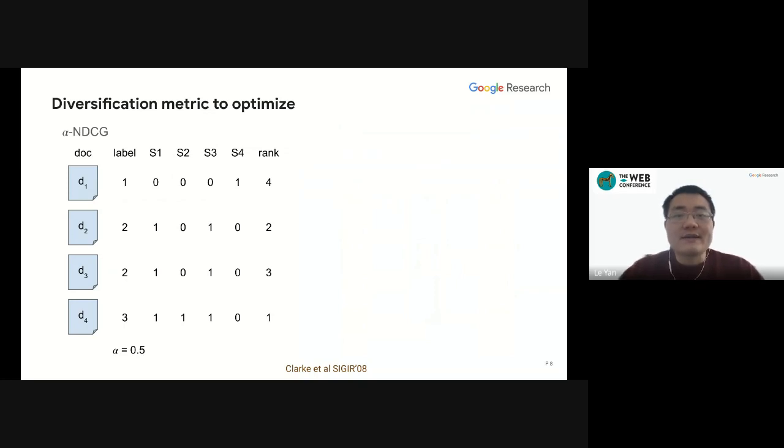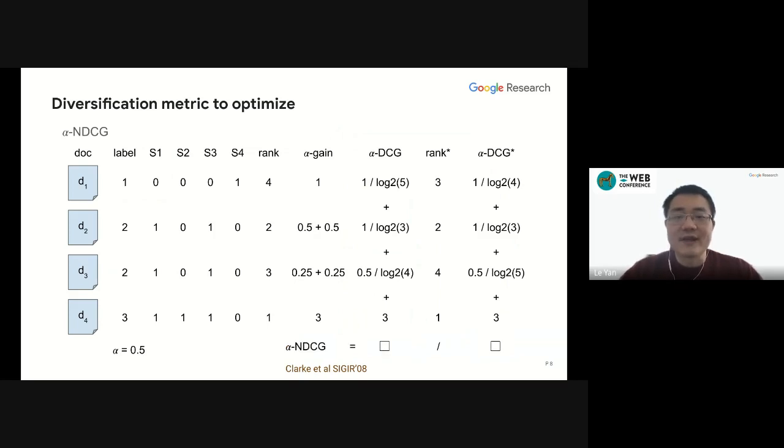To directly optimize the diversification metrics, consider alpha NDCG metric as an example. Given a ranking of the candidate documents and the subtopic labels of the documents, we can compute an alpha gain based on the subtopic relevance and a discount due to the coverage of the same subtopic in the top-ranked results. And similarly to the discounted accumulated gain DCG, we can multiply alpha gain with a rank discount and sum them to get an alpha DCG. And usually we use a normalized version, alpha NDCG, as a metric for diversification. But for the optimization purpose, alpha DCG is sufficient.